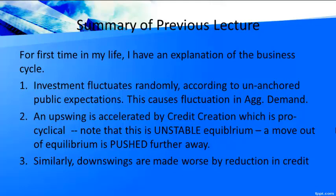In a stable equilibrium, if you move away from it, you are pushed back towards it. Think of a ball at the bottom of a cup — if it moves away, it rolls back. But an unstable equilibrium is like a ball resting at the top of a hill; if it moves slightly away, it falls further down. There is also a neutral equilibrium — a flat surface — where the ball simply stays wherever it is placed. These are the three types of equilibria.